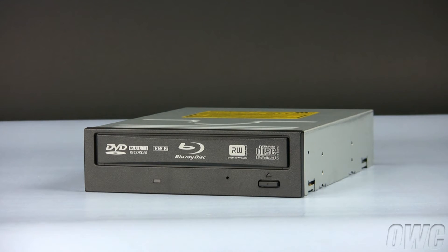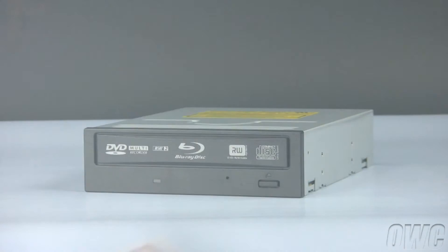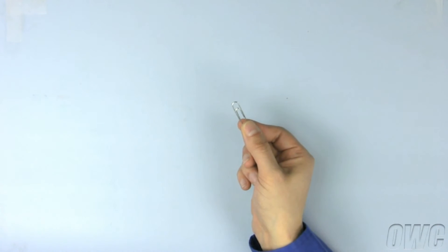To prepare the optical drive for installation, you will need a simple paper clip. Straighten the paper clip so that it looks something like this.